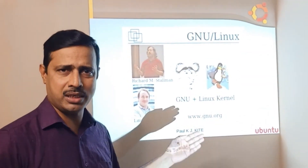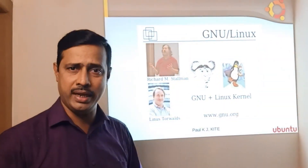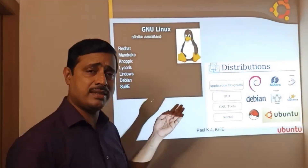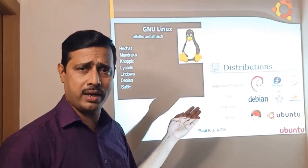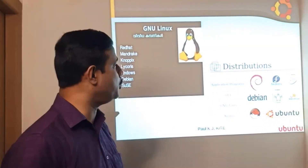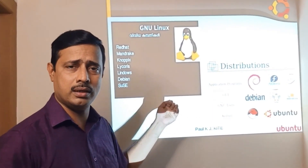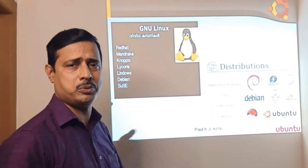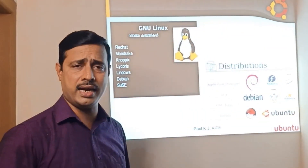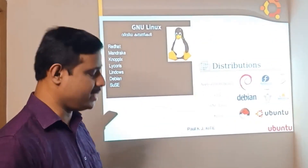For example, the Linux kernel — Linux has been installed. In the same way, we can find a simple distribution called Red Hat, and other distributions like Fedora and Slackware. So we have all these different Linux distributions.